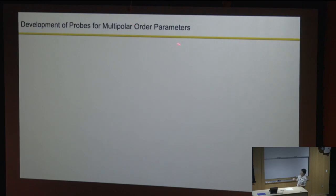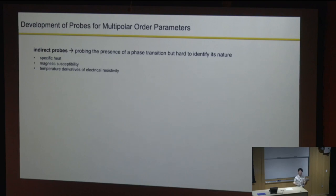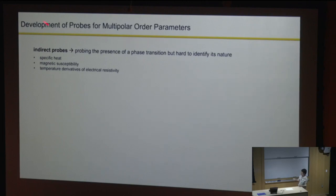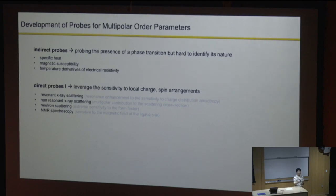I'll give a brief overview of probes for measuring multipolar orders. The first kind is really indirect—thermodynamic measurements where ordering shows an anomaly in temperature dependence. They measure the presence of something but do not tell the nature of the order. These include specific heat, magnetic susceptibility, and sometimes resistivity measurements. Then people dove into the first type of direct probes—diffraction techniques and NMR—leveraging their local sensitivity to detect local arrangements of electric or magnetic dipoles.